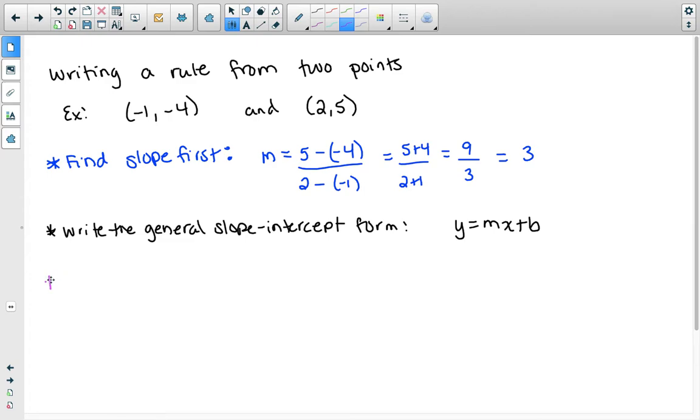Next, we're going to substitute one of the original coordinates and the slope that we just found into y equals mx plus b. So we're going to use this general form. We're going to replace anything that we have, so we're going to use one of these coordinates from the original and our slope. We're going to plug it into here.